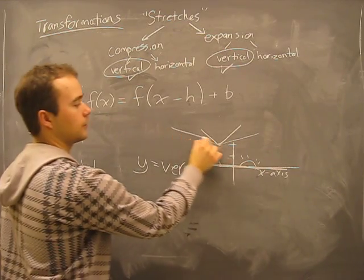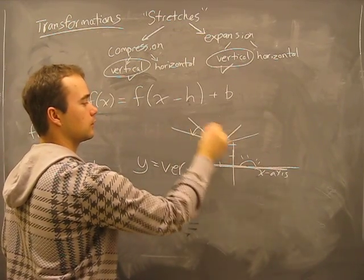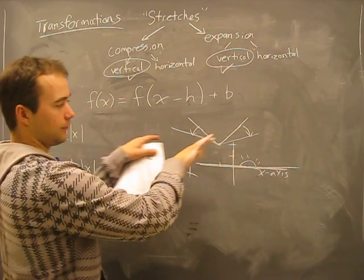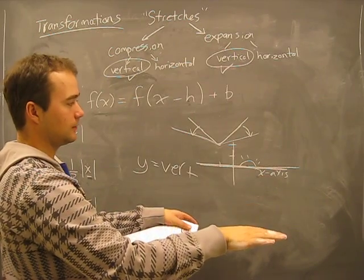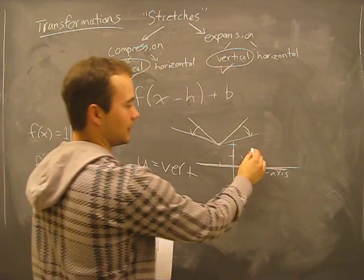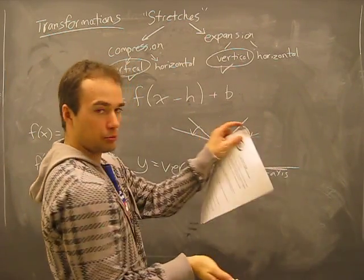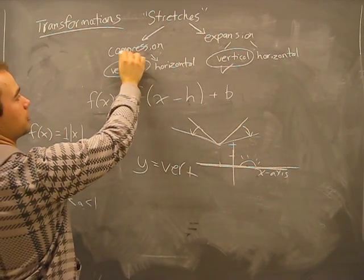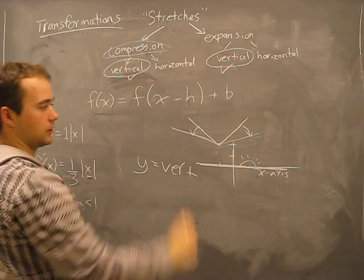We know that the graph compresses to a flat, more flat, flatter. Like if you had marshmallows under here, they would be compressing the marshmallows. So therefore it's got to be a vertical compression, not a vertical expansion.